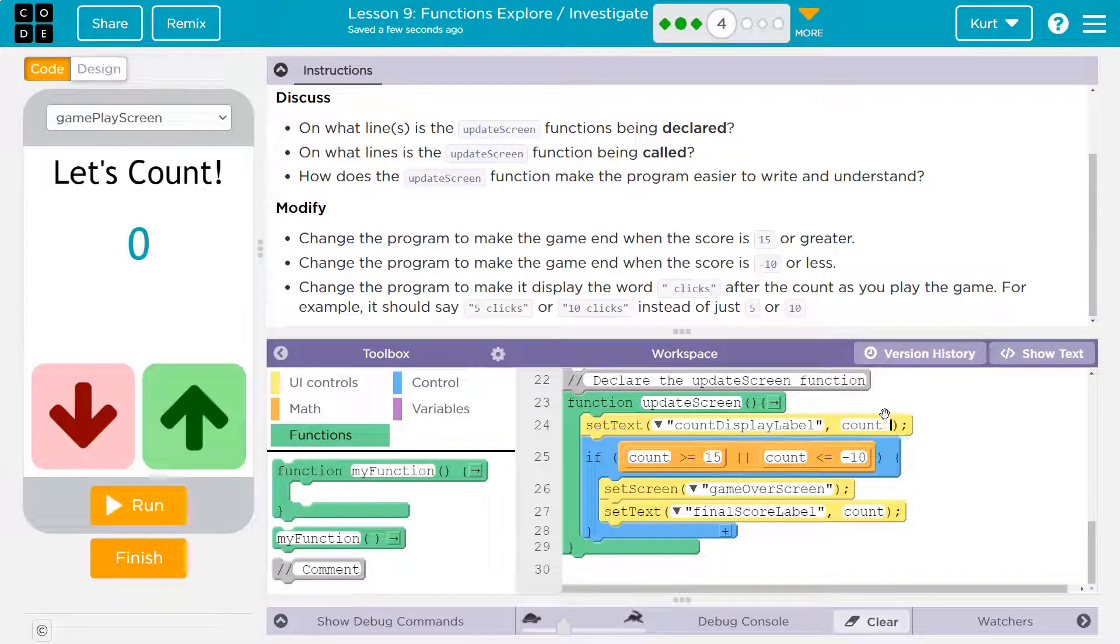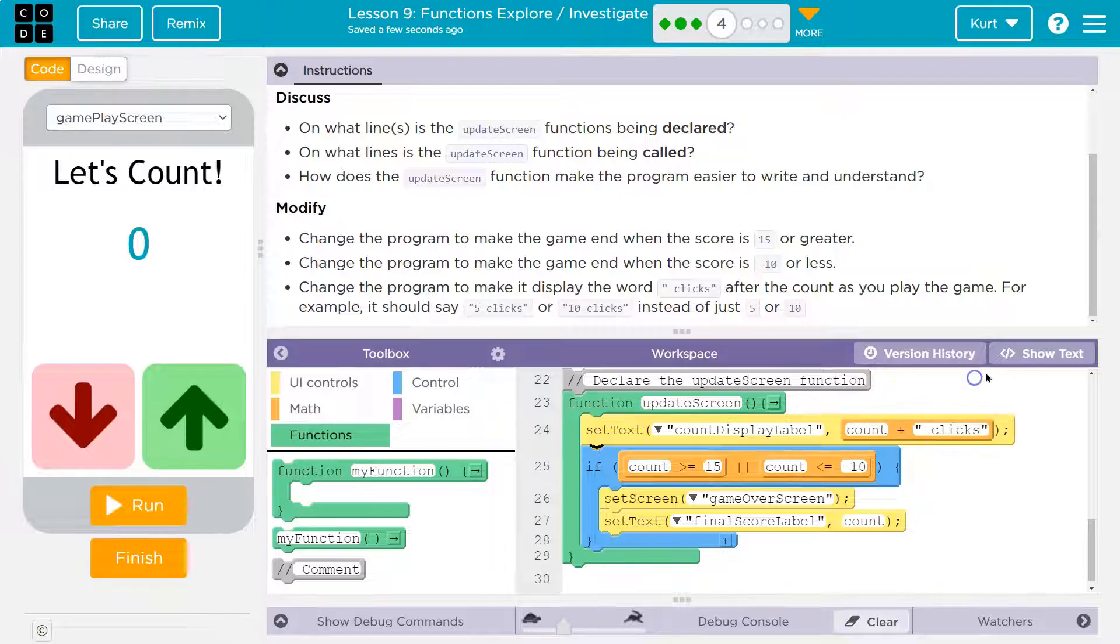So remember when we did concatenation of strings, when we jam two strings together, or we can jam strings together with words. So I'm going to put a plus here, and then in quotes—because this is not a number—I'm going to do space and the word clicks and count. You can also drag out a plus to do that. So we're going to grab that count variable, whatever number it equals. We're adding to that, in quotes because it's a string, space clicks. Let's see if it works.